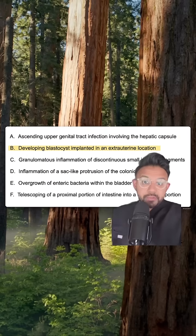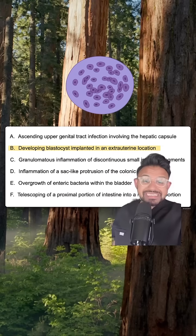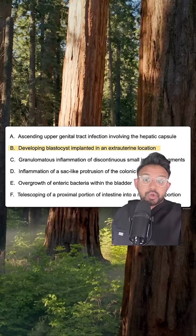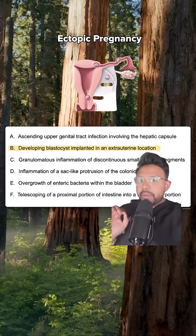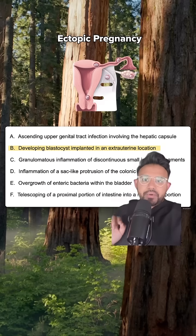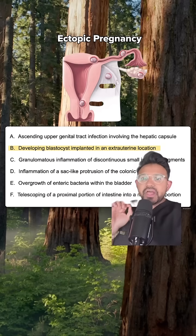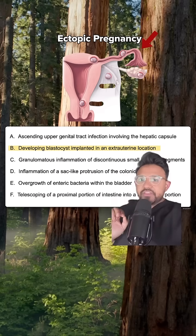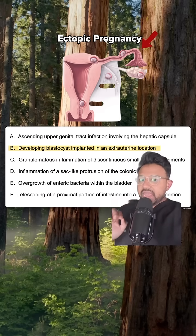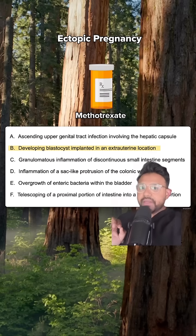Answer choice B: developing blastocyst implanted in an extrauterine location. This is going to be very characteristic of an ectopic pregnancy. From an anatomy standpoint, ectopic pregnancies occur most commonly in the ampulla of the fallopian tube, and for Step 2CK, if the patient is stable, you can consider doing methotrexate.